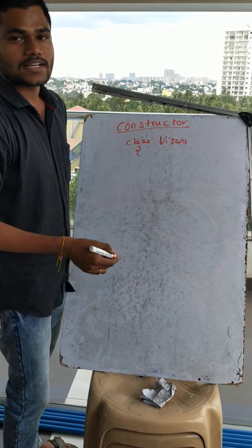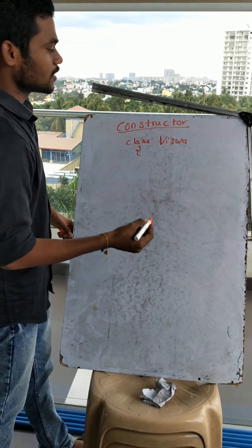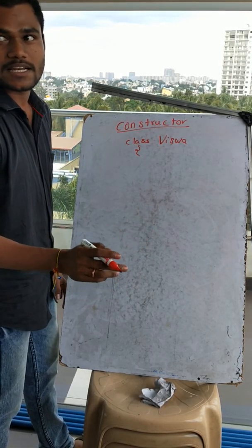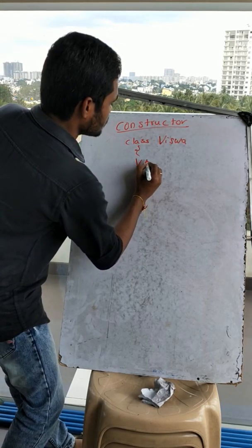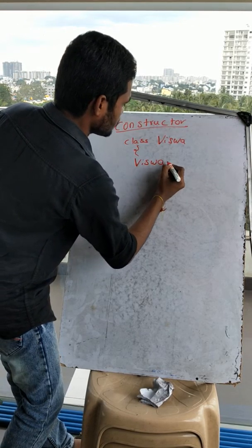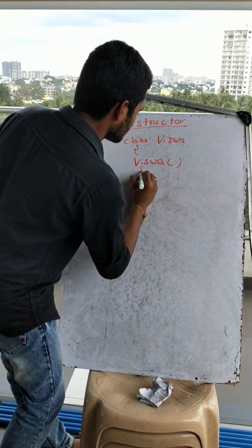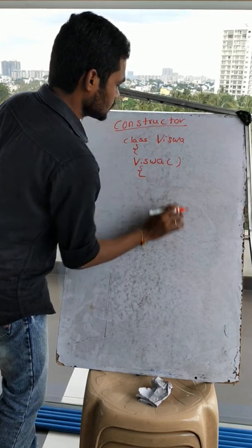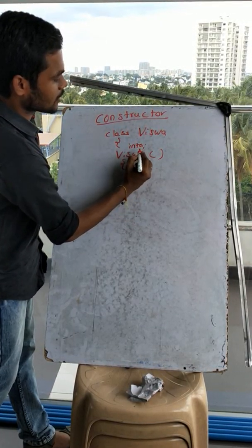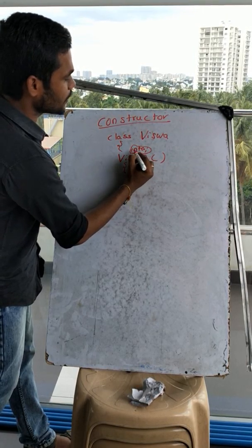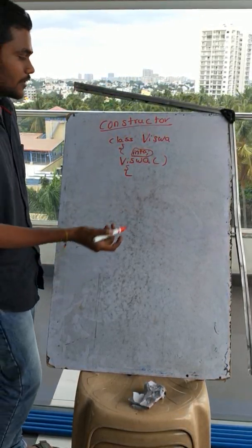There are some rules while creating a constructor. Here, the constructor name must be the same as the class name. The instruction order is not preserved but can be predicted. There is a global variable, and we need to initialize that global variable.